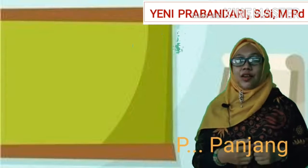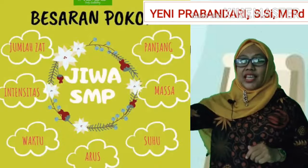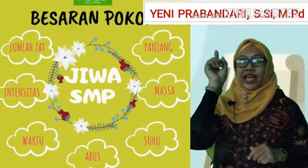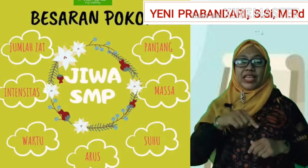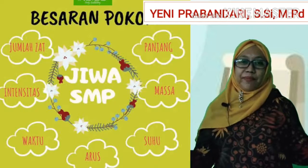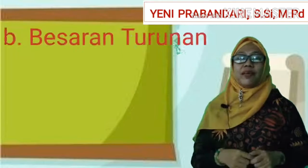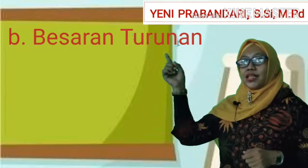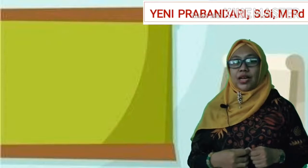Ingat ya, kita bicara besaran pokok. Ada tujuh huruf, yaitu J, I, W, A, S, M, P — 'JIWASP'. Berarti yang tidak termasuk ke dalam tujuh tadi adalah merupakan besaran turunan, yaitu besaran yang satuannya diturunkan dari besaran pokok.